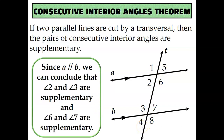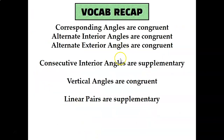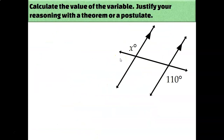We also learned about consecutive interior angles, which are supplementary if the lines intersected by the transversal are parallel. This one's a little different — all the other angle pairs are congruent to each other. Consecutive interior angles, like angle 2 and angle 3, are supplementary to each other. One of your angles is going to look pretty acute, like angle 2, and the other pretty obtuse, like angle 3. You can see they're not congruent just by looking at the diagram, which tells you they must be supplementary. Let's put all of this vocabulary into practice with some diagrams.